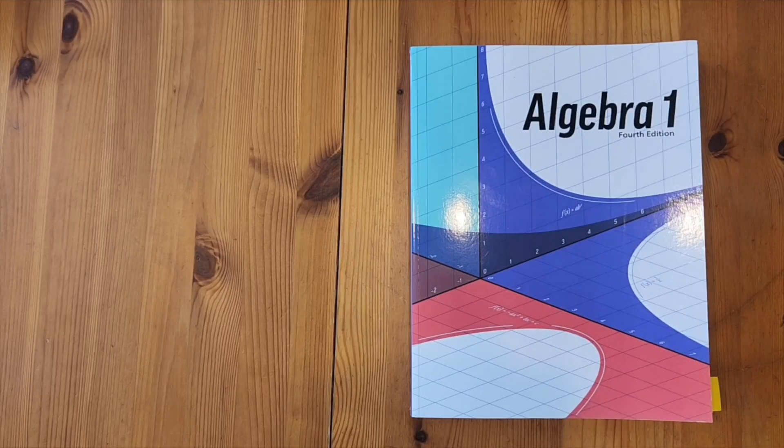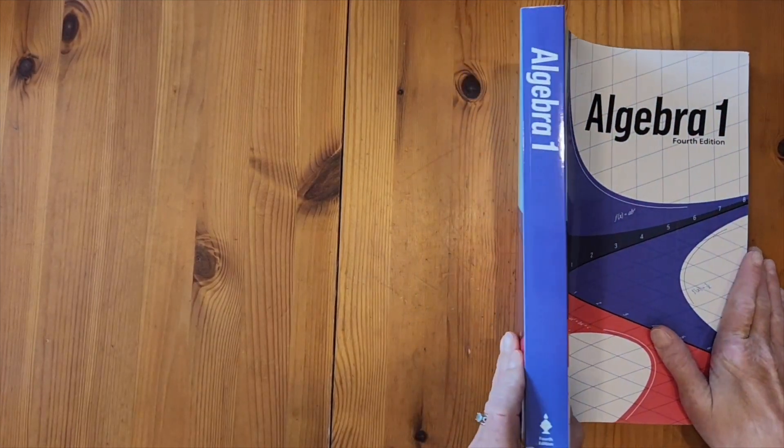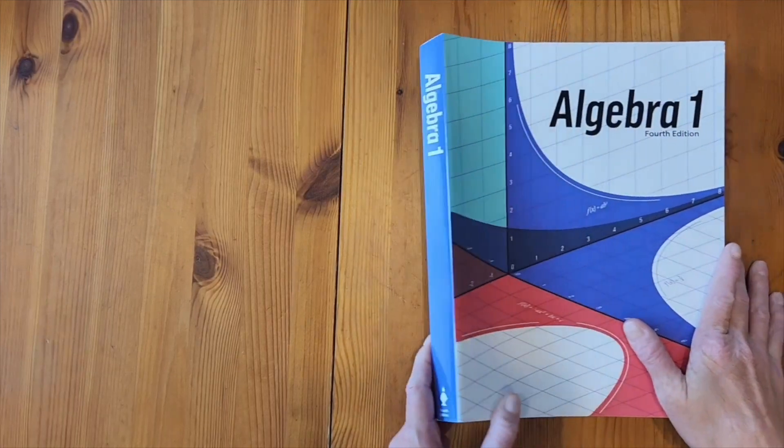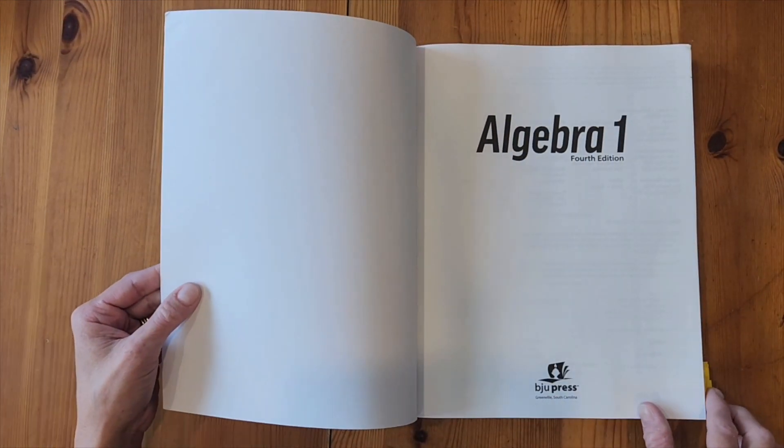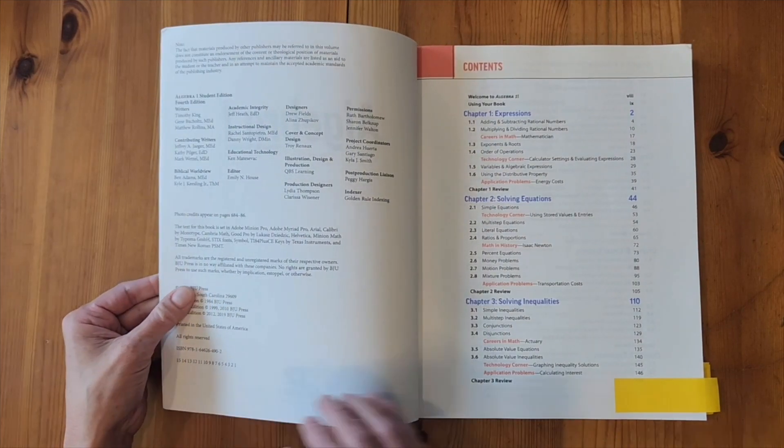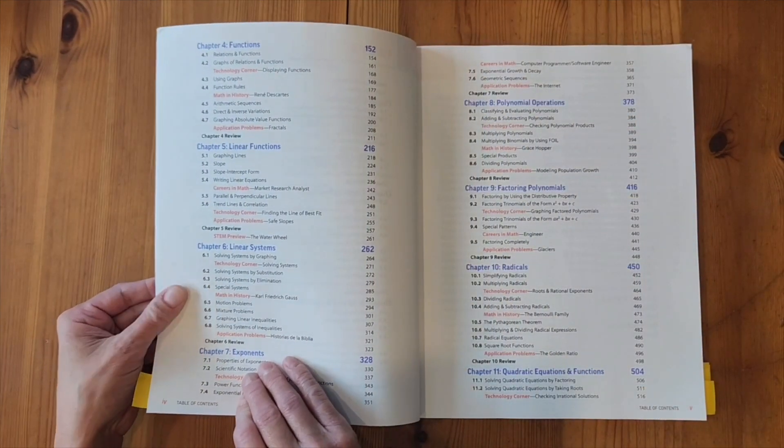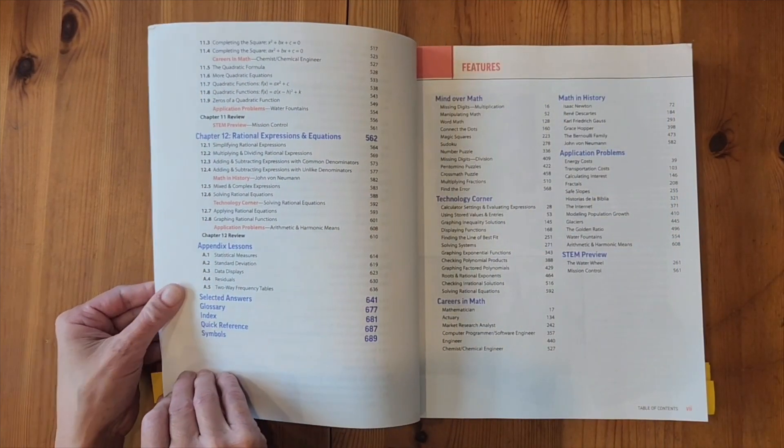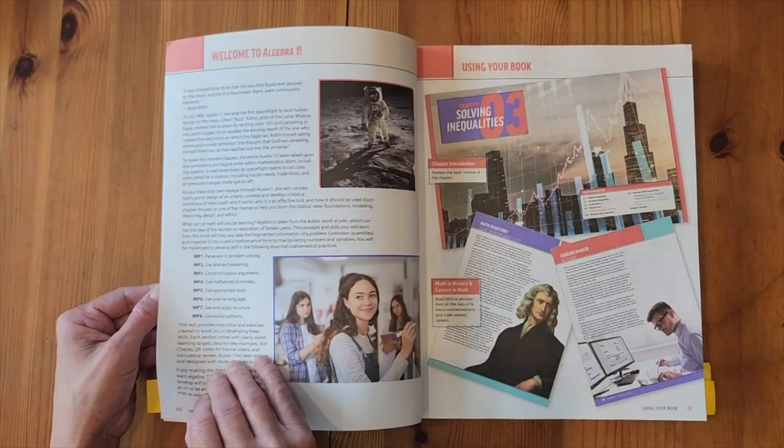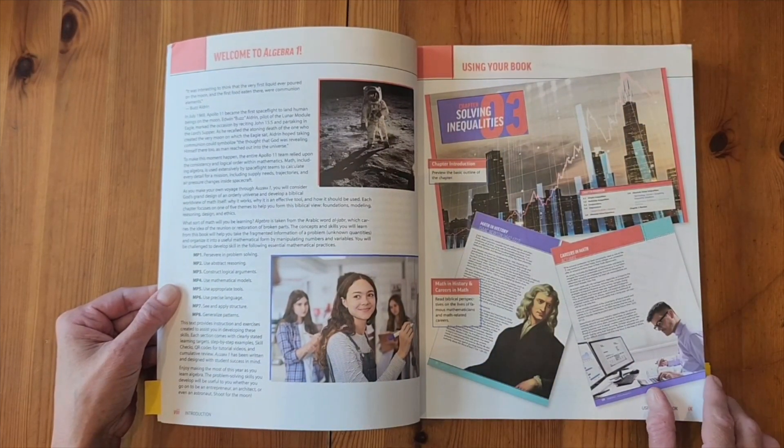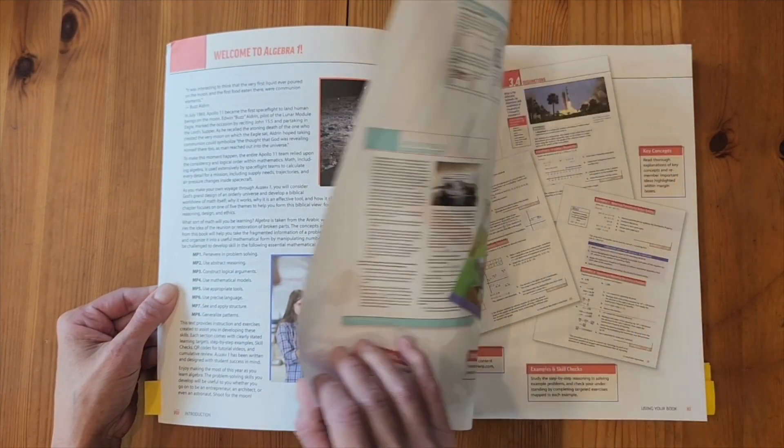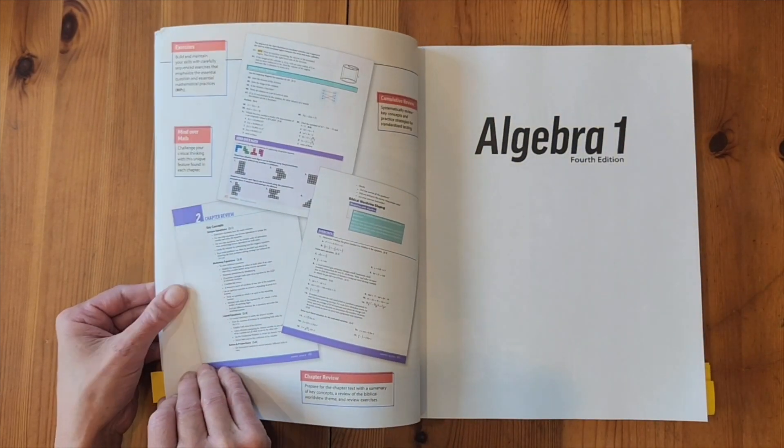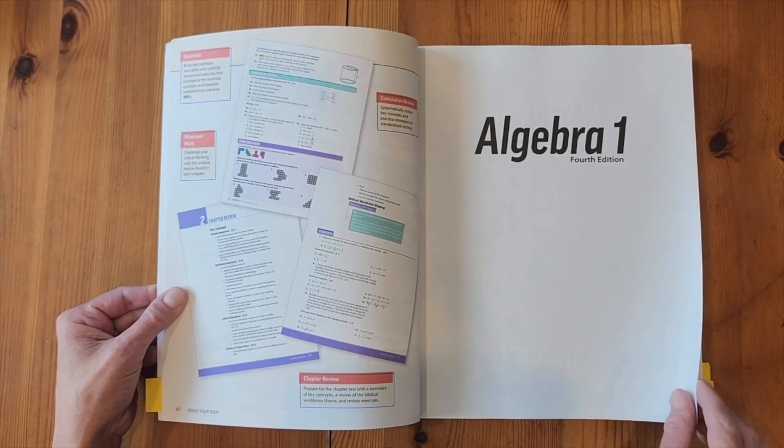So this is the Algebra 1 Teacher Edition. This is the Algebra 1 student textbook. It's about an inch, a little bit more than an inch thick. It is bound together, and this is a textbook, so it's not a book you would have your student write in. Instead, you would want to get blank sheets of paper or notebook paper and have them write on that. It does start with the table of contents and go over the features, just like the teacher edition did. And then there's the intro pages to how to use this book and the features there. And then it jumps into the first chapter of Algebra.